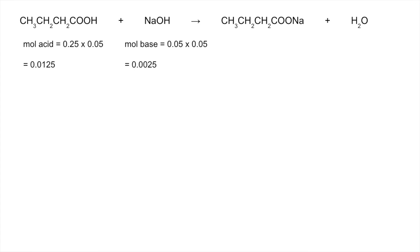You can see the acid's in excess, so the leftover remaining acid is going to be the difference between those two numbers: 0.01. There's going to be no sodium hydroxide left, but the moles of salt that's going to form is coming from the limiting reagent, which is the sodium hydroxide. So we're going to have 0.0025 moles of salt formed.